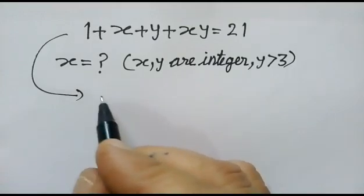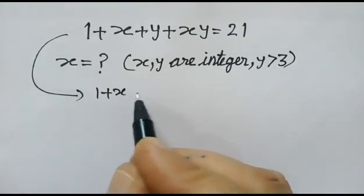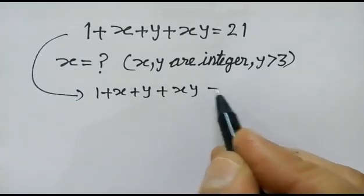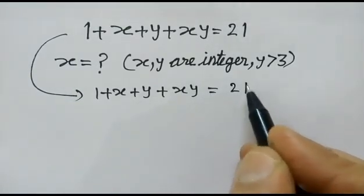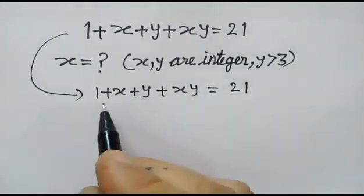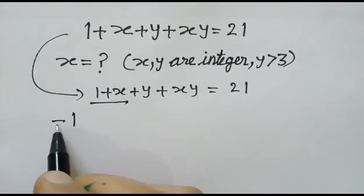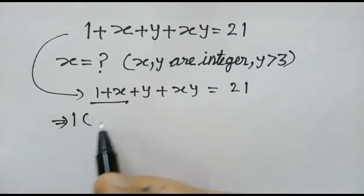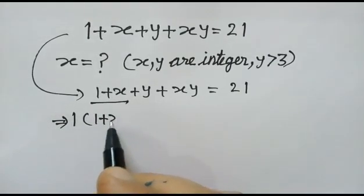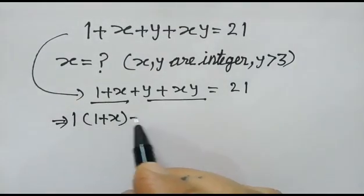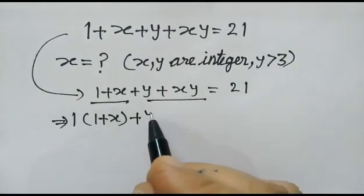Let's start: 1 plus x plus y plus xy is equal to 21. We will take 1 as common. Here 1 plus x and this pair, we will take y as common.